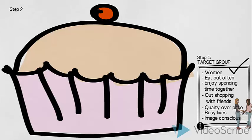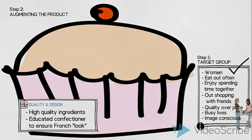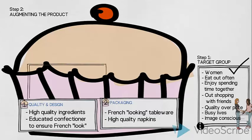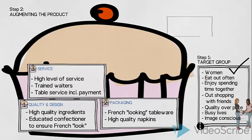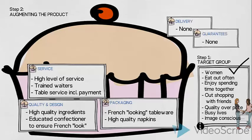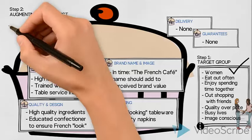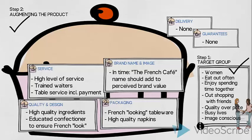On the basis of our knowledge about the target group, we have now defined how we will augment the product, the cakes and desserts. We decided on a high level of quality design and packaging. We decided on a high level of service. We decided not to offer home deliveries or guarantees. And we determined that the brand name and image will, in time, provide added value to our augmented product. This way, we can give the owner of the French Cafe specific details of how to meet the desired target group's needs and desires. By defining exactly what to include in the product offering.